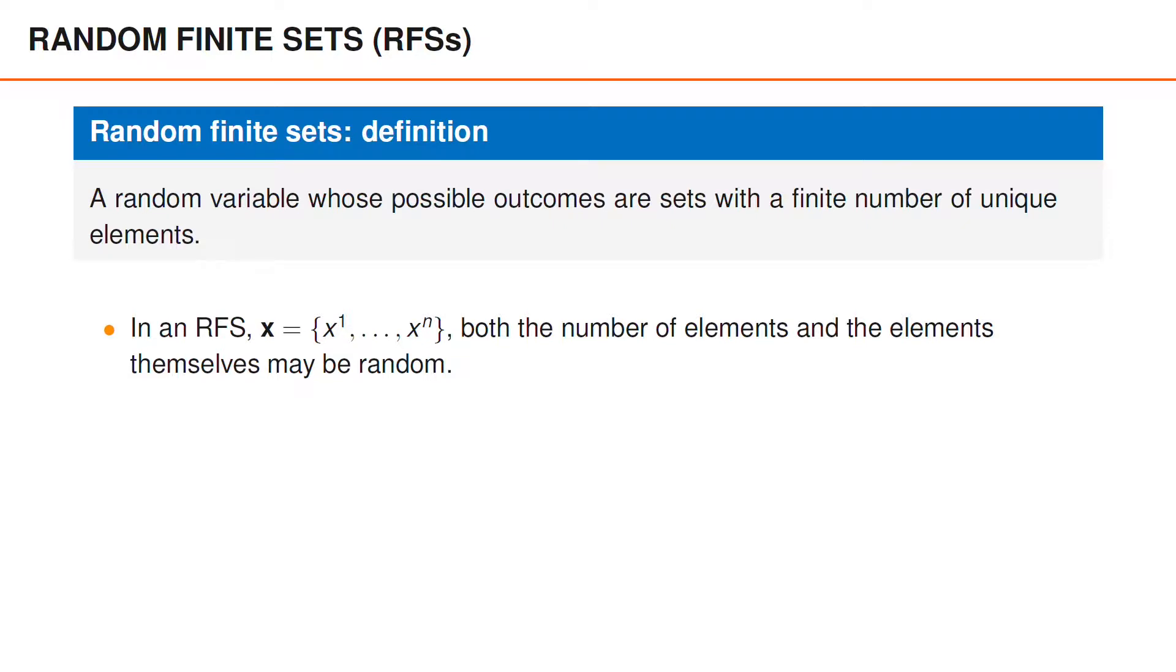For instance, if the RFS boldface x contains the vectors x1 to xn, then both the number of elements n and the vectors x1 to xn are random.